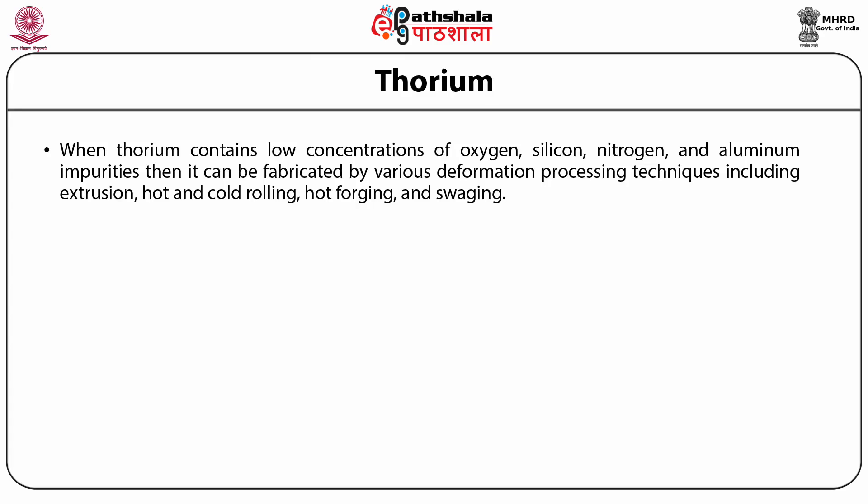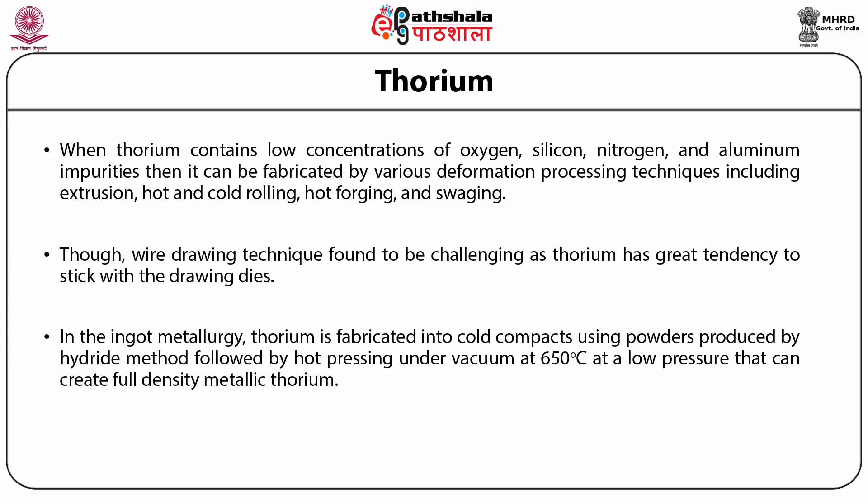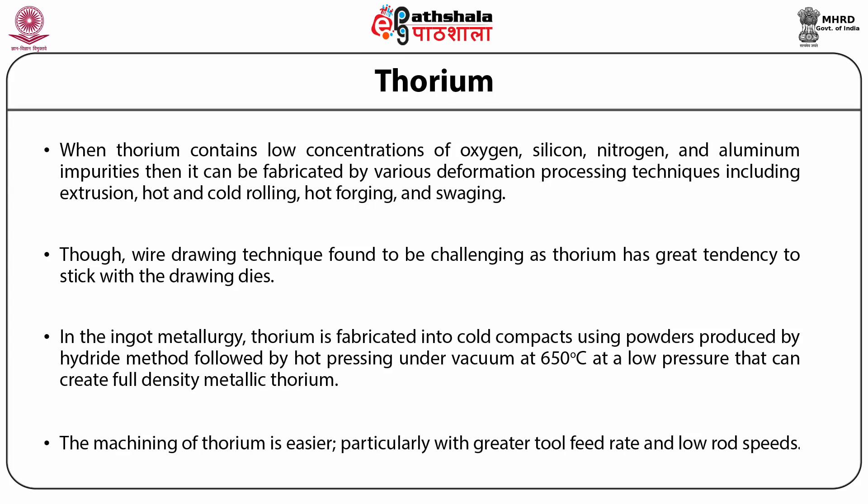Fabrication techniques include extrusion, hot and cold rolling, hot forging and swaging, though wire drawing is challenging as thorium tends to stick with the drawing die. In ingot metallurgy, thorium is fabricated into cold compacts using powders produced by the hydride method, followed by hot pressing under vacuum at 650°C at low pressure to create full-density metallic thorium. The machining of thorium is easier, particularly with greater tool feed rate and low rod speeds.